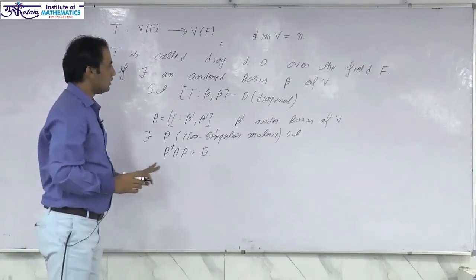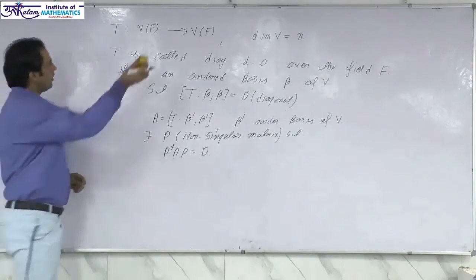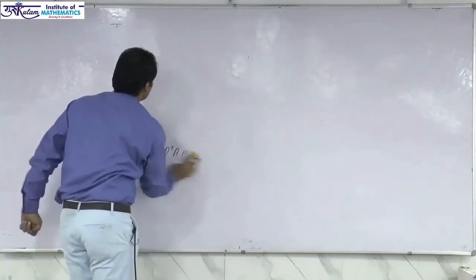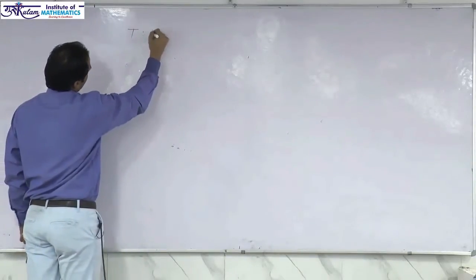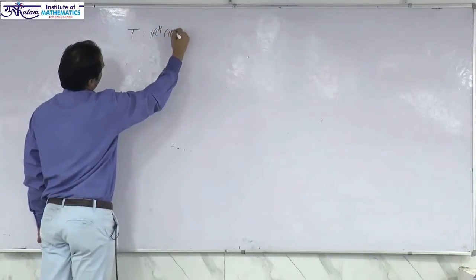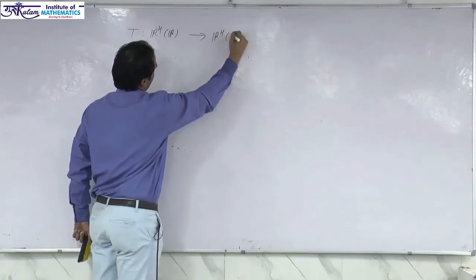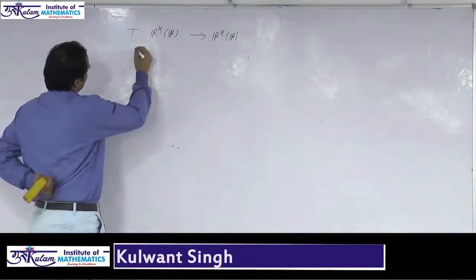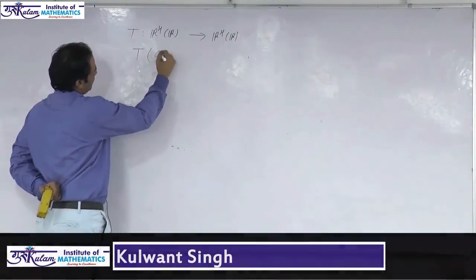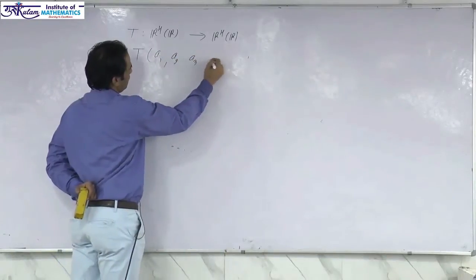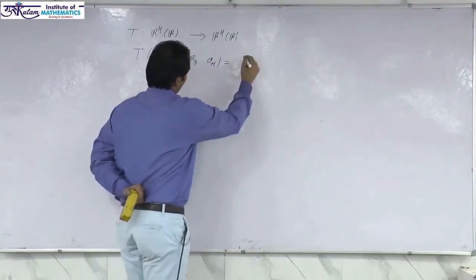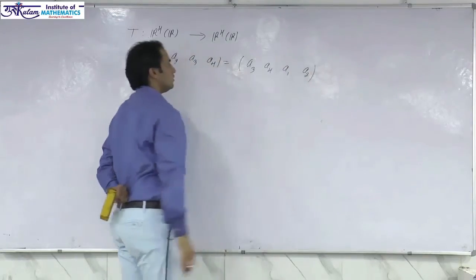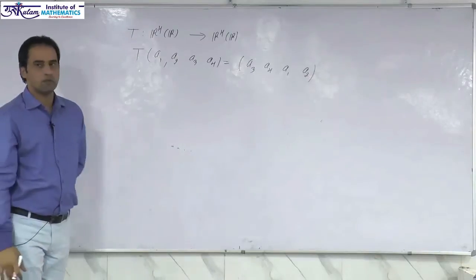Let us consider an example of the diagonalizable operator. If we take T to be a linear operator from R⁴ over R to R⁴ over R, where R⁴ is the 4-tuple with real components, and T is defined as T(a₁, a₂, a₃, a₄) = (a₃, a₄, a₁, a₂). So T is a linear operator from R⁴ to R⁴.